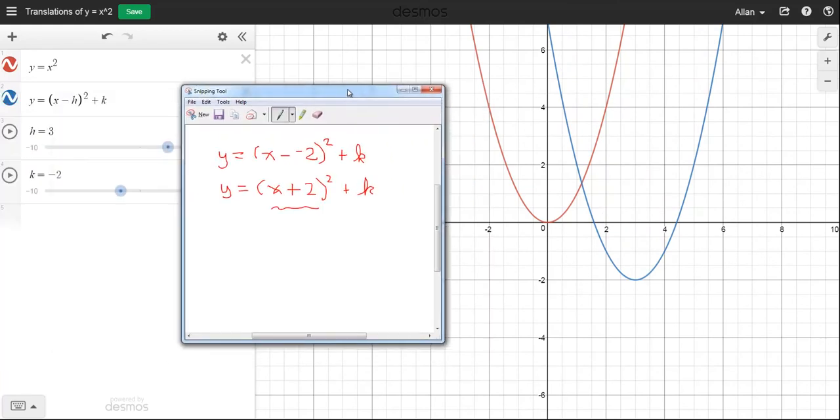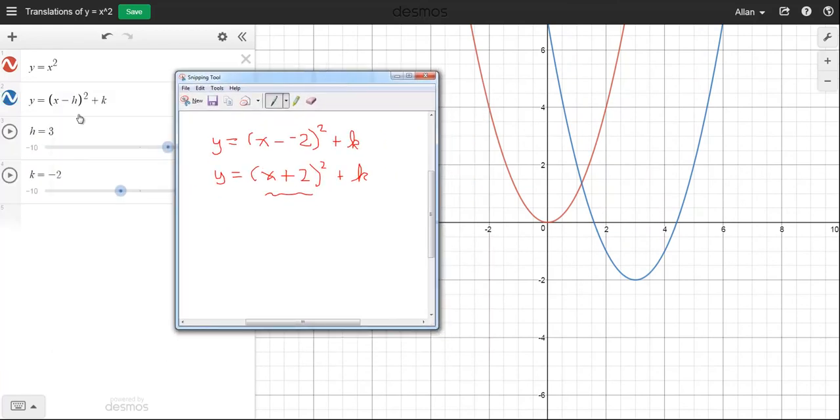So this would actually be the graph of, so h is three, k is negative two. Notice that the vertex over here is at three, negative two.